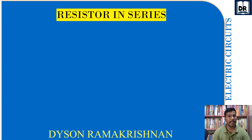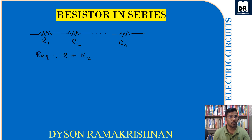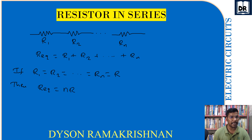Resistors in series: if there are n resistors in series — R1, R2, ... Rn — the equivalent resistance is R_eq = R1 + R2 + ... + Rn. If all resistors are equal, that is R1 = R2 = ... = Rn = R, then R_eq = nR. Remember this concept — it will be helpful for solving MCQs.